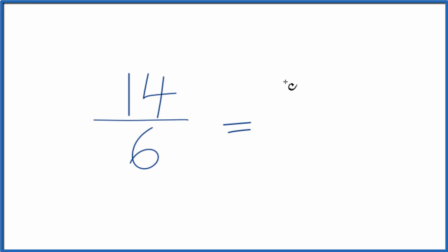14 divided by 2 is 7. 6 divided by 2 is 3. So we've simplified the fraction 14/6 down to 7 thirds, and we can't reduce or simplify this any further.